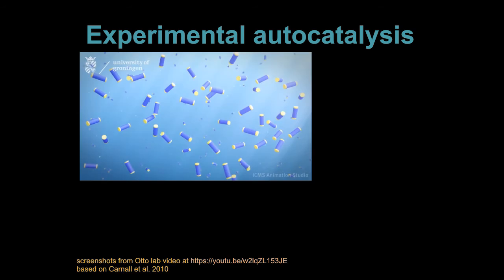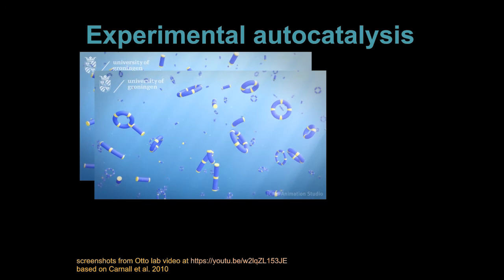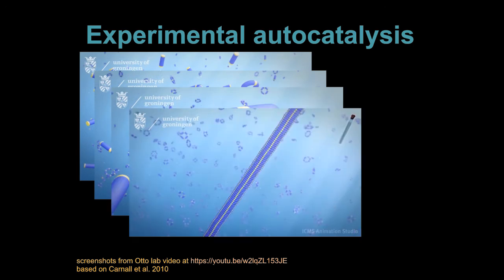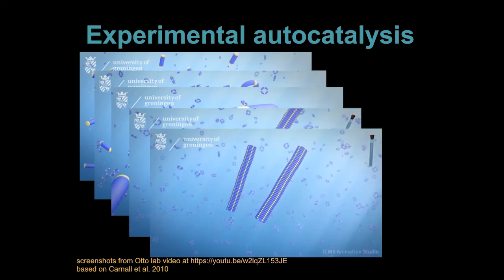At the other end of the scale, there are groups working on autocatalysis involving macromolecular interactions and molecular self-assembly. These are screenshots from a video by Zeep and Otto's group. They start with molecular building blocks that can self-assemble into these ring structures. Depending on their size, these rings can stack on top of each other, and the stacks can grow quite long. But when the system is stirred, the stacks can break in half. So through a mechanism roughly similar to the one I showed for the Formose reaction, the concentration of stacks can grow exponentially.